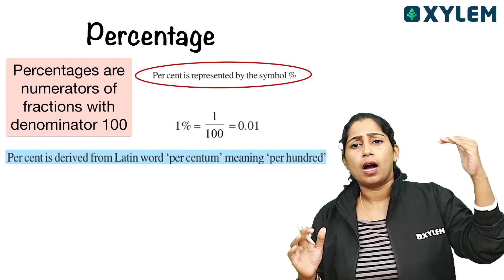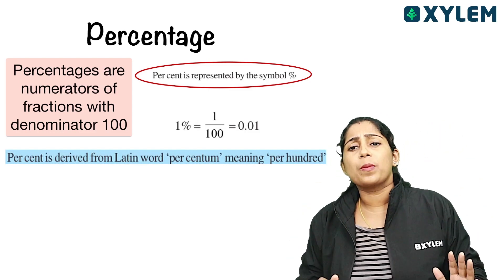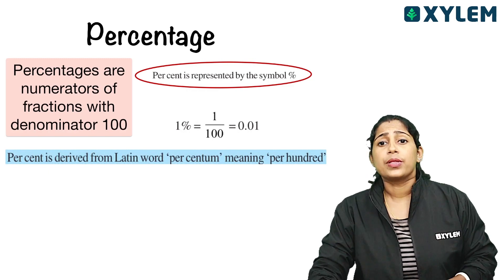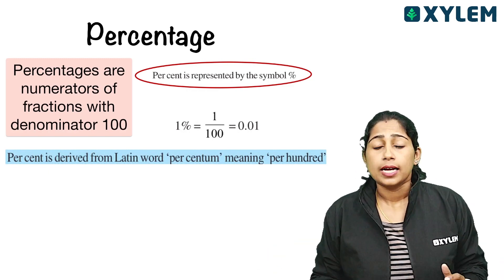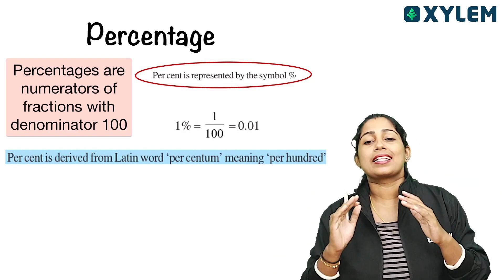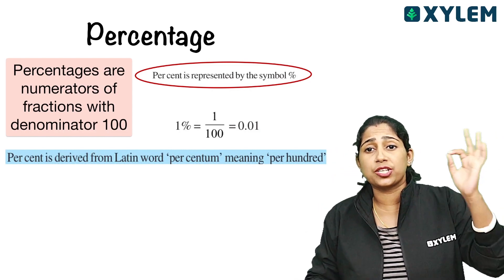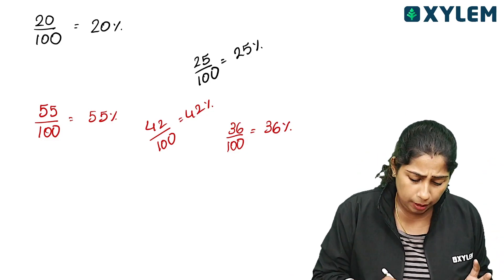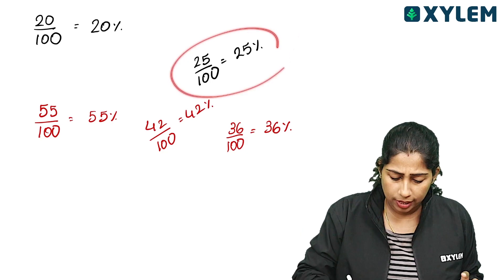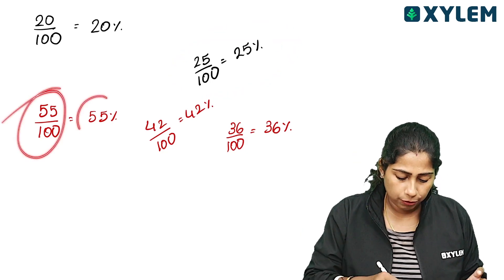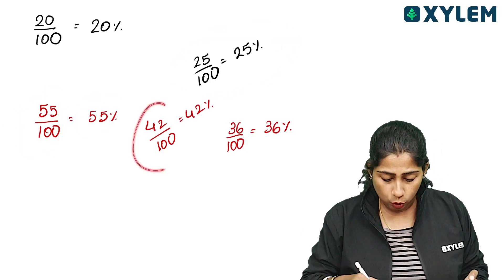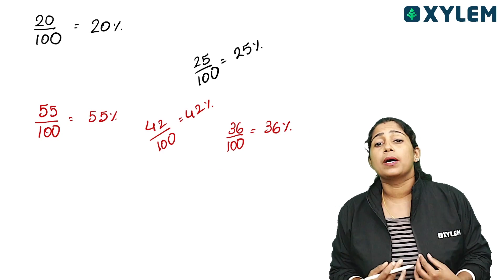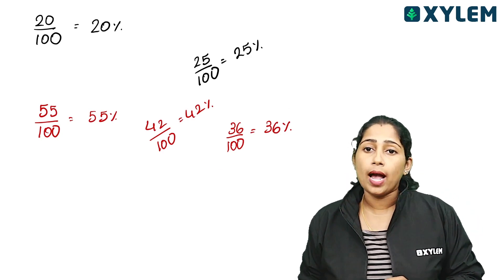Percentage is nothing but out of 100 — the denominator is 100, and we use the numerator. 2 percentage is 2 by 100. 3 percentage is 3 by 100 — out of 100. Let's do examples: 20 by 100 is 20 percentage. 25 by 100 is 25 percentage. 55 by 100 is 55 percentage. 42 by 100 is 42 percentage. 36 by 100 is 36 percentage. This is how we write percentage — out of 100.